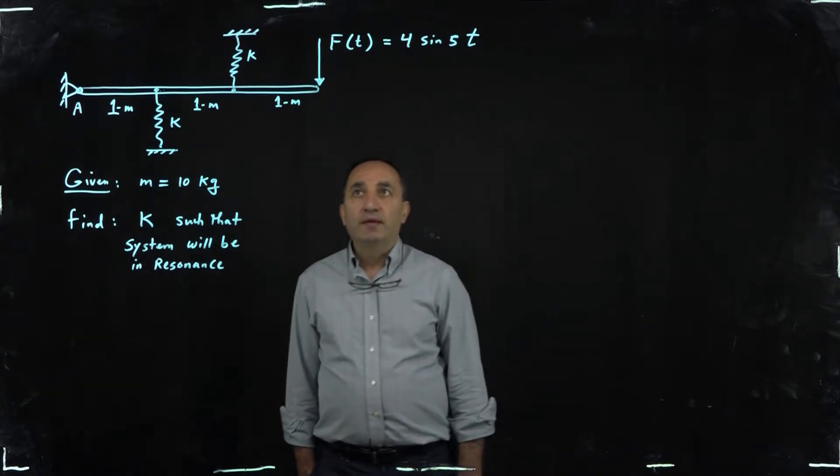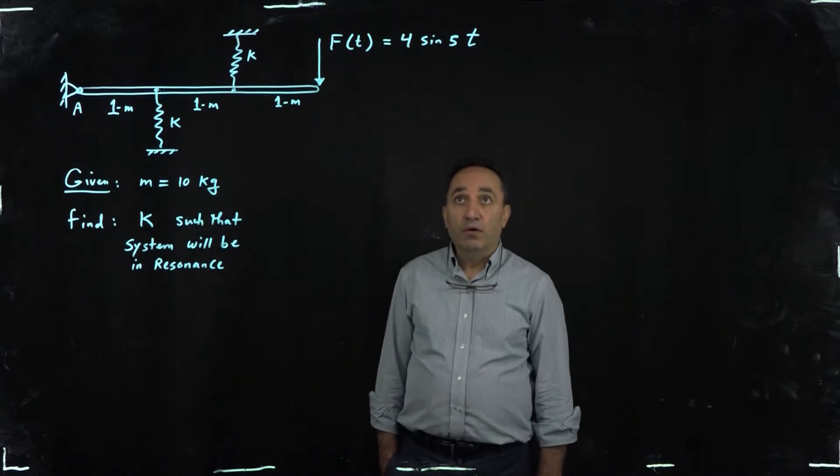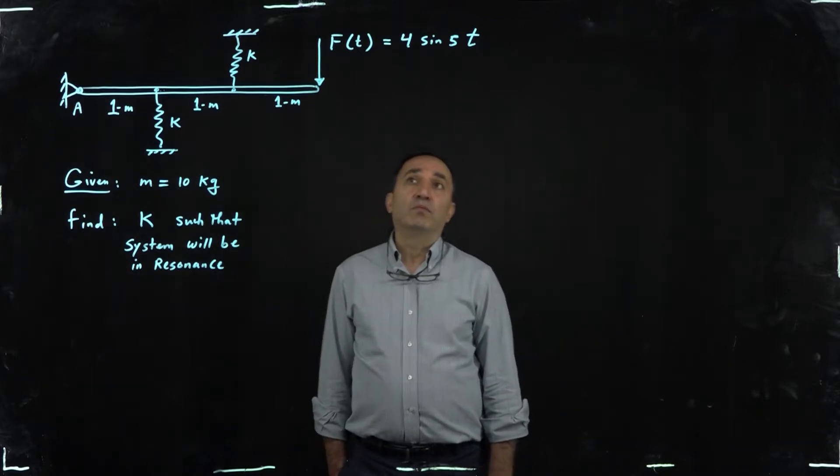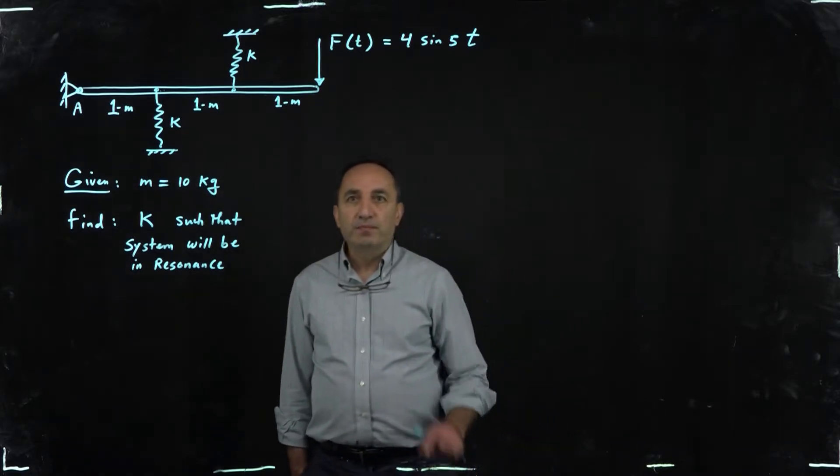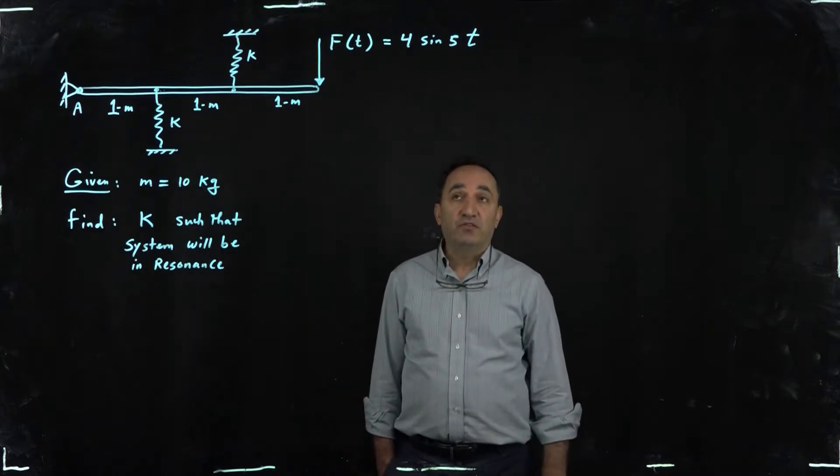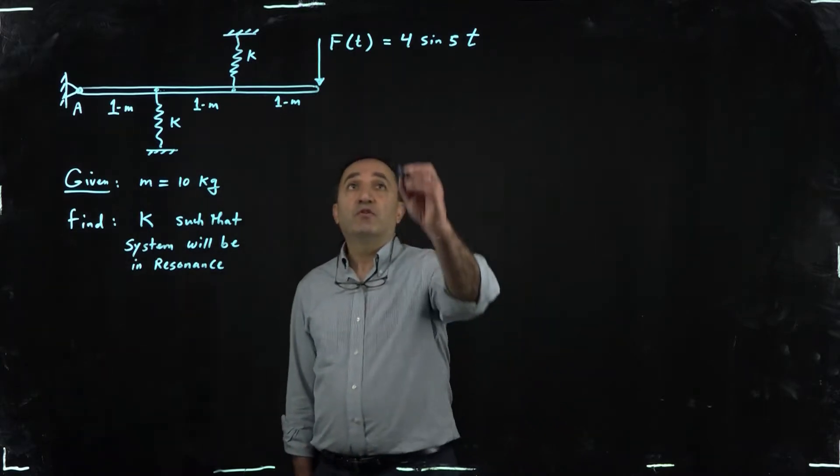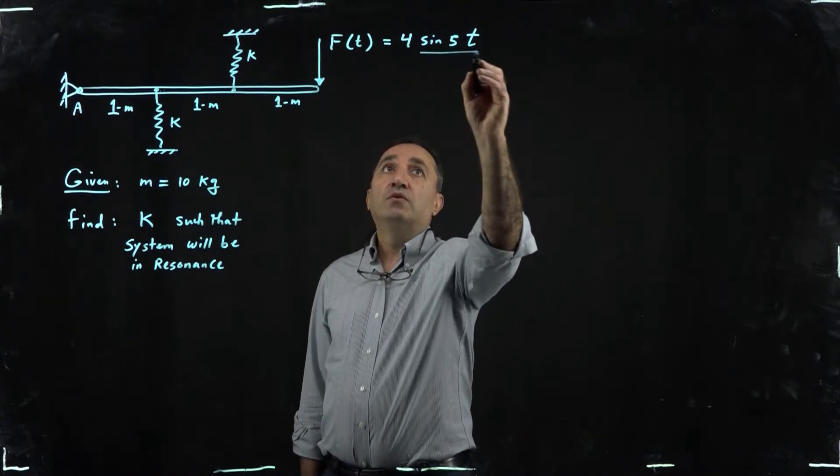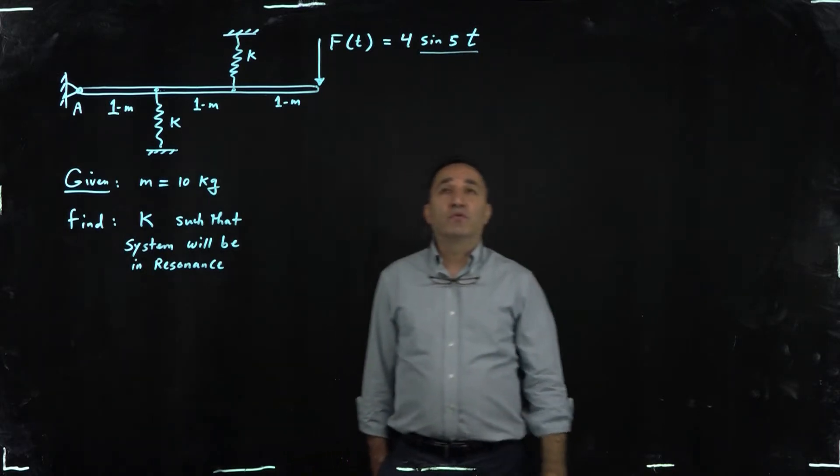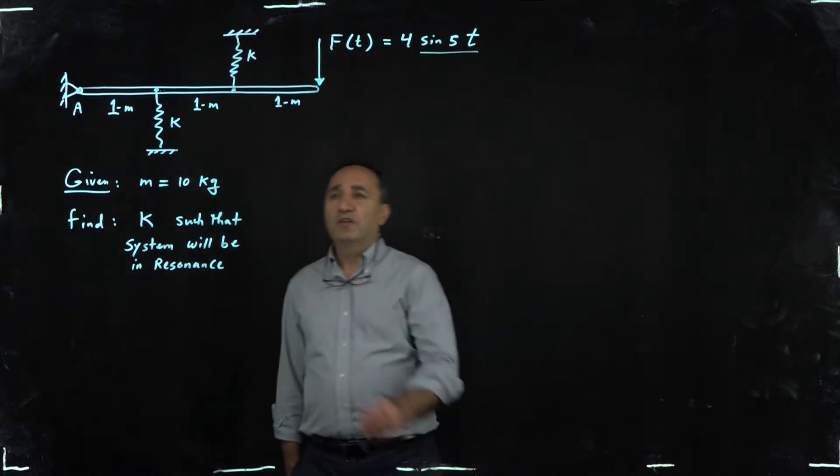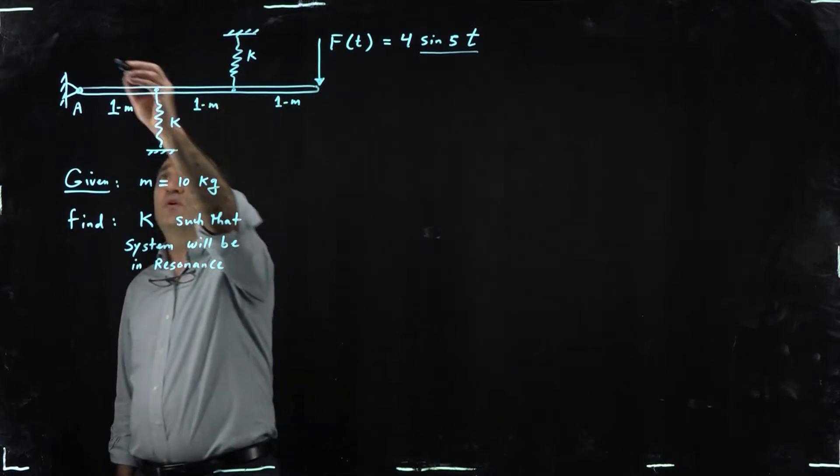In particular, harmonic excitation, meaning a system that is being disturbed by a force which is harmonic. Harmonic means you're having a sine wave or cosine wave, so in this case as you could see we have what we call a slender rod.